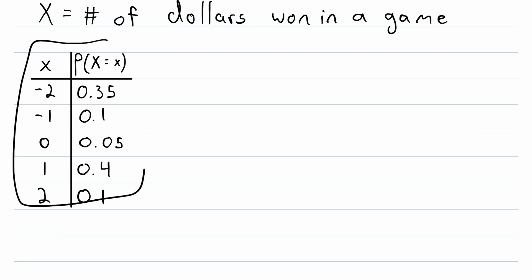And then here we have the probability mass function of the random variable x. In the first column, we have the possible values that the random variable can take on. So we could lose two dollars in this game, we could lose one dollar, we could break even, we could win one dollar, or we could win two dollars.